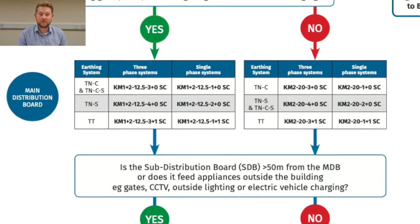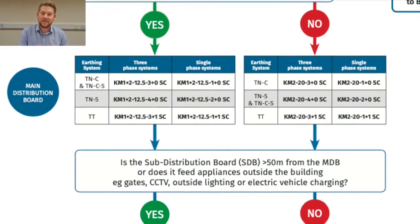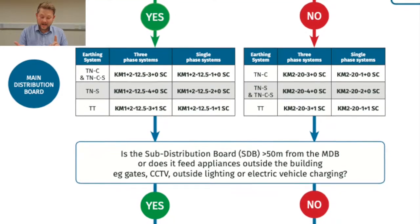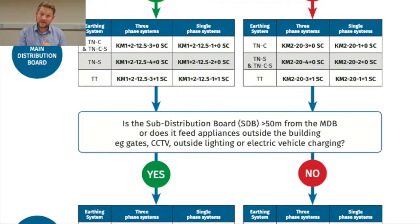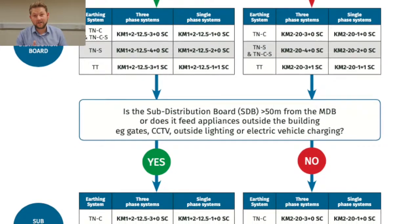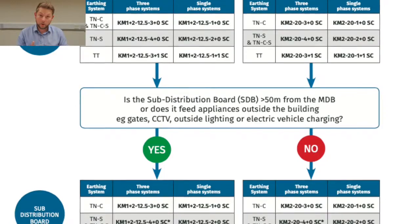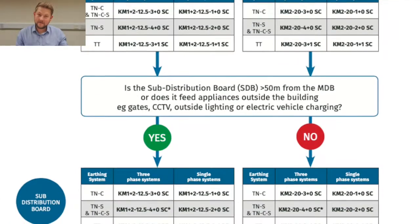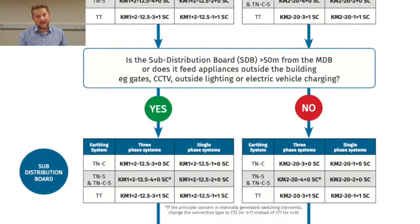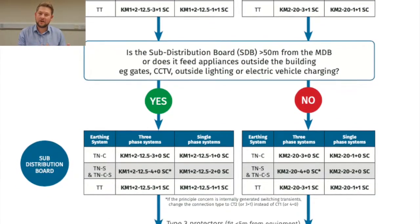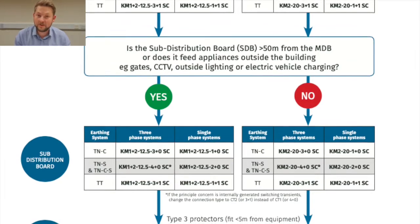Once we've got the correct main distribution board device selected, we can move on to sub distribution boards. Again, just a couple of questions: is the sub distribution board more than 50 meters from the main distribution board, and does it feed outside of the building? If it does, or if it is further than 50 meters, then again a type 1 and 2 device. If it's over 10 meters but doesn't feed outside of the building, then we're looking at a type 2 device.